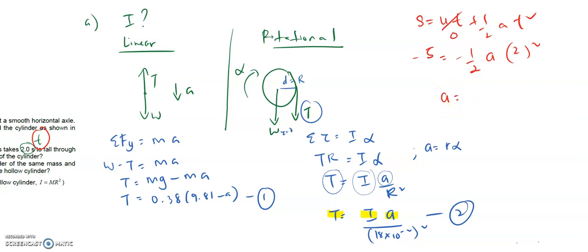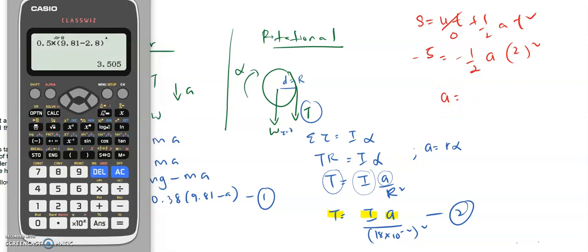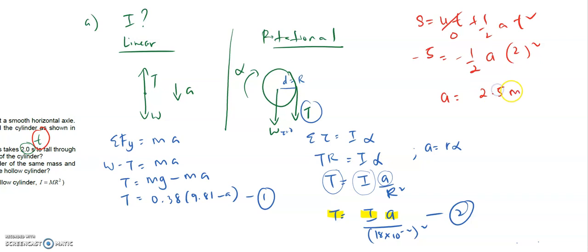They gave us five. This is zero because at rest. ½a we don't know. T is given, is two seconds, two squared. It's going down negative because they're going down. A will be negative, going down. Negative negative can cancel, so you can get a.